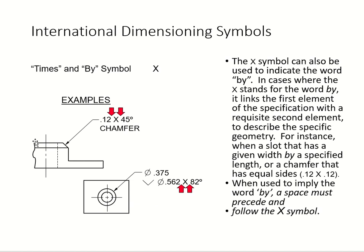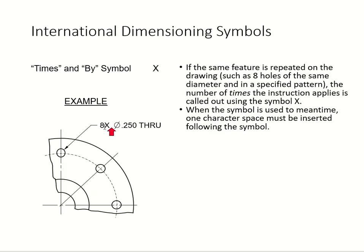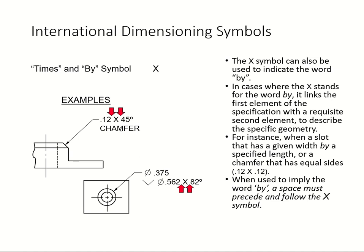The times/by symbol is also used on a chamfer. When dimensioning a chamfer, you use the times/by symbol followed by the angle. For example, a chamfer at 45 degrees from horizontal. Similarly, a countersink here is called out at 82 degrees — that little V-shape — using the times/by symbol with the angle.